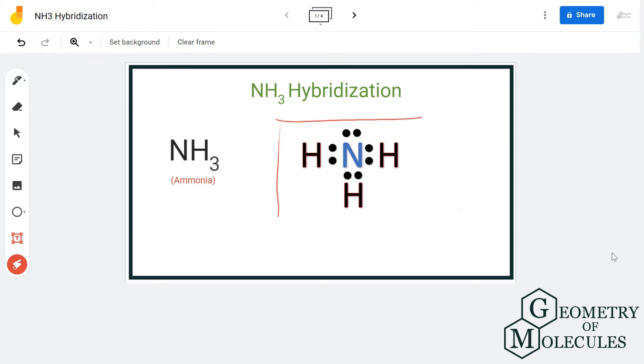When we look at the Lewis structure of NH3, the nitrogen atom is forming three bonds with three hydrogen atoms. These are single bonds, and it is also left with one pair of non-bonding electrons, which is also known as one lone pair of electrons.